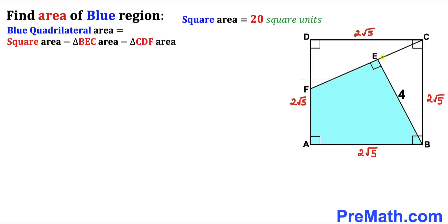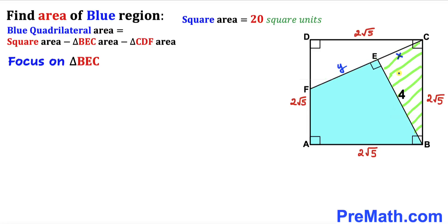Let me label side length EC as X and EF as Y units. Now let's focus on right triangle BEC and use the Pythagorean theorem to solve for the value of X.